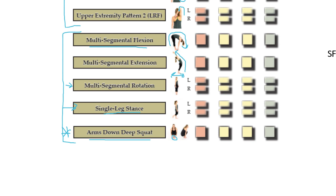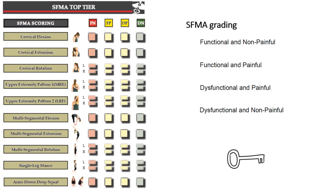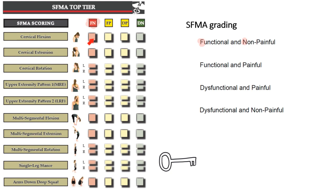Now that we've covered the 10 movements, let's talk about grading. One key is placing performance into different categories. The ideal response is to perform the movement functionally without any pain — that category is Functional Non-Painful, or NFN, designated in red. Red here means you can stop and don't need to further explore that movement; they have no pain and full function.